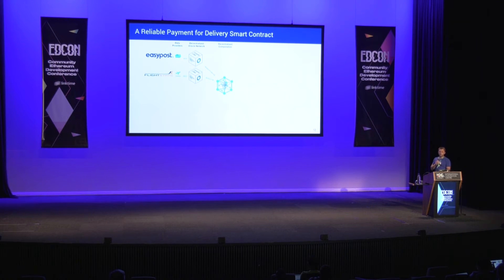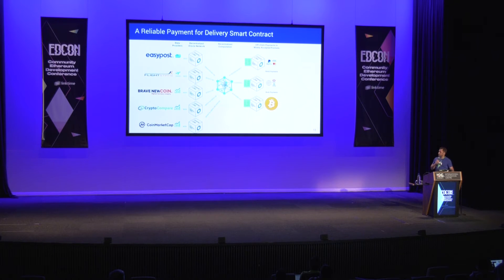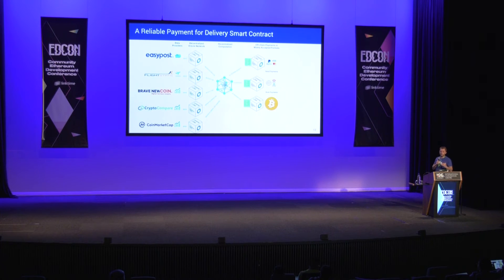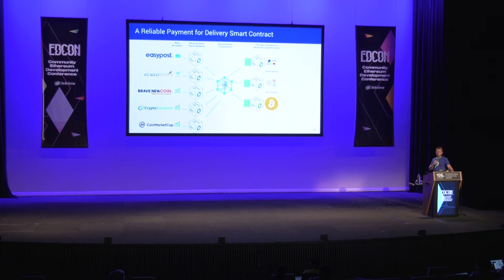Most smart contracts in the world today are still denominated in fiat, but settled in cryptocurrency. In line with the delivery example, you need multiple sources for exchange rates to make sure you have the right rate — to calculate how much cryptocurrency to transfer between parties. For instance, if delivery costs a thousand dollars, you need to know how much ETH to send, so you need to know the value of ETH.